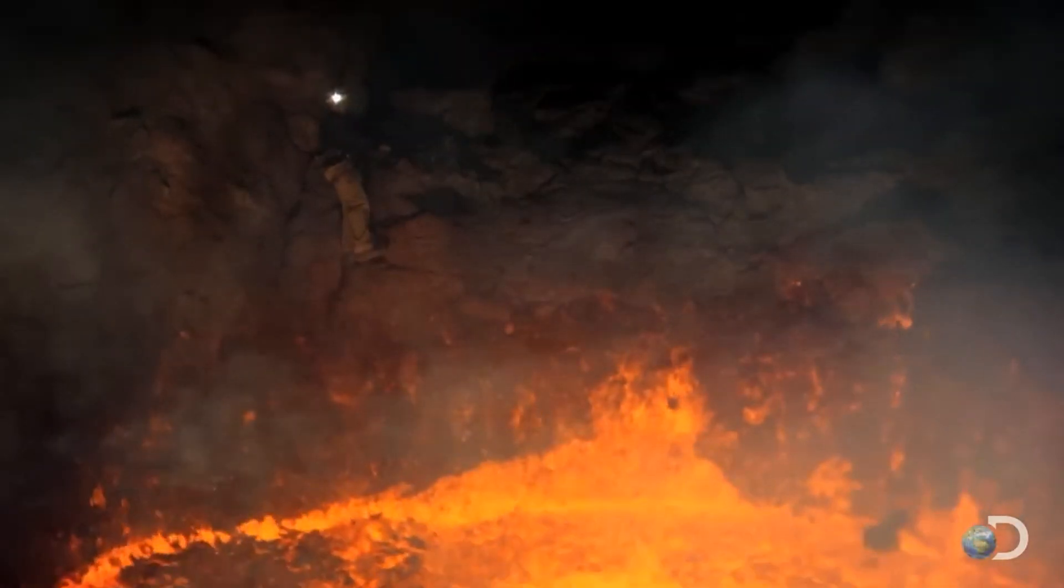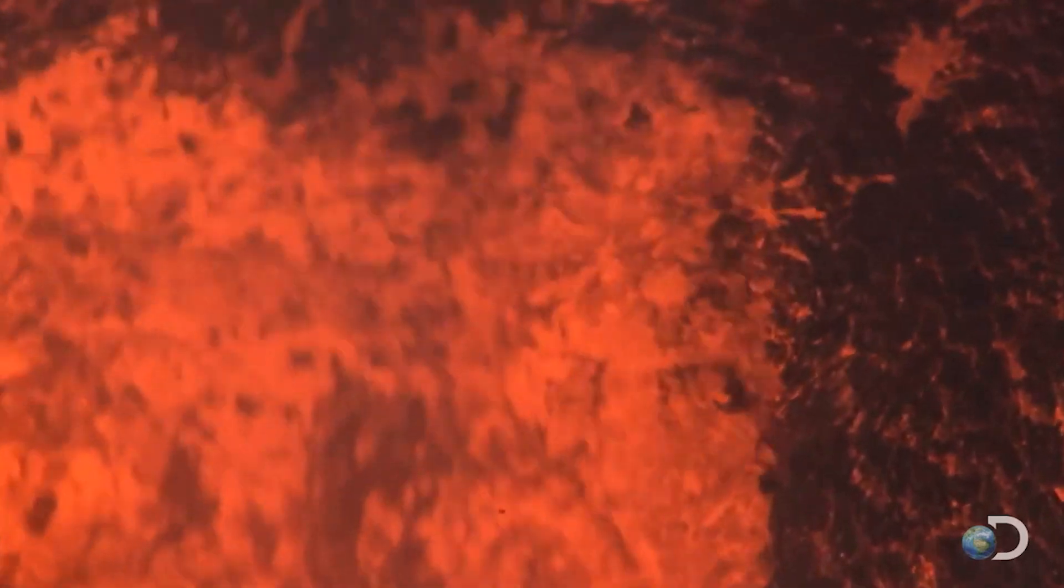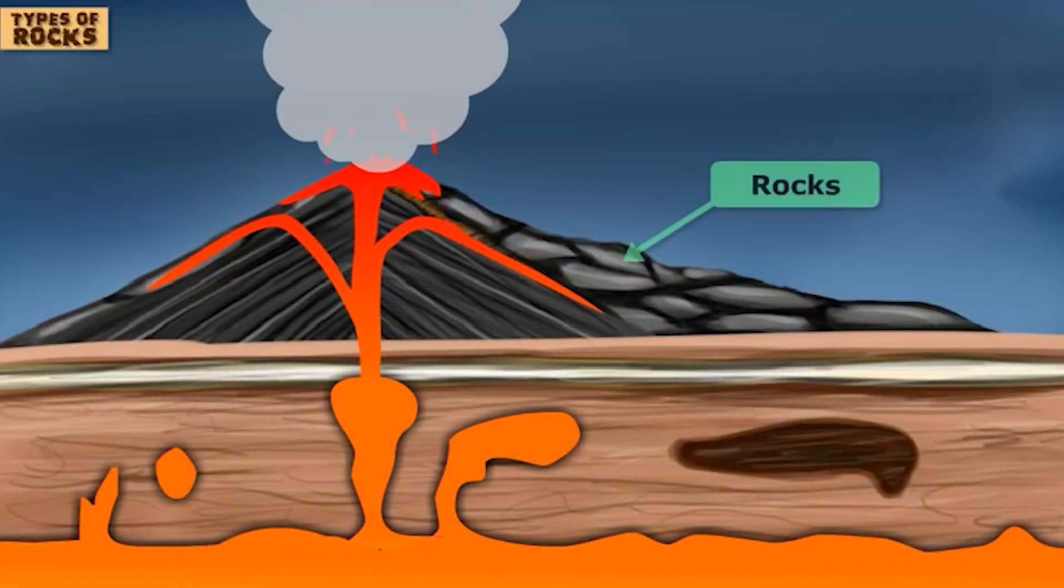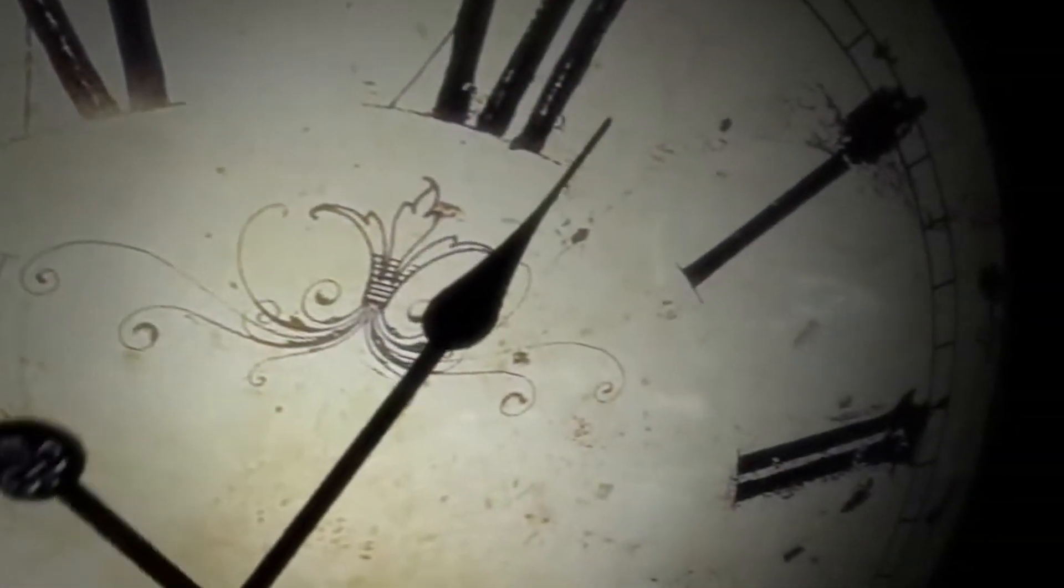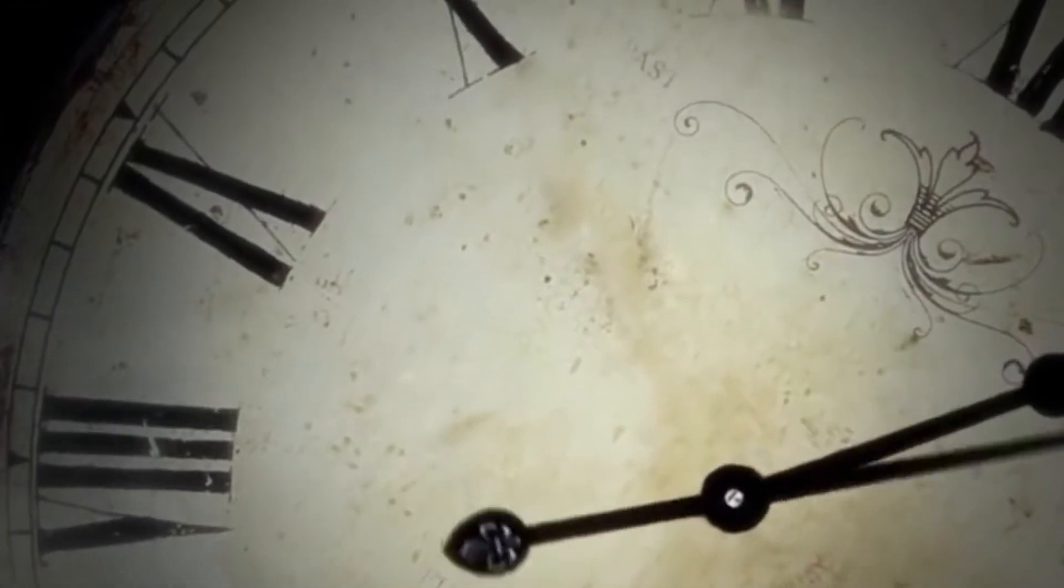Now let's take this a step further. If the heat and pressure continue to build, metamorphic rocks can melt and turn into magma once again. When this molten rock eventually cools, we're back to the beginning of the cycle with the formation of new igneous rocks. This cycle can take millions of years, but it's constantly happening beneath the earth's surface.